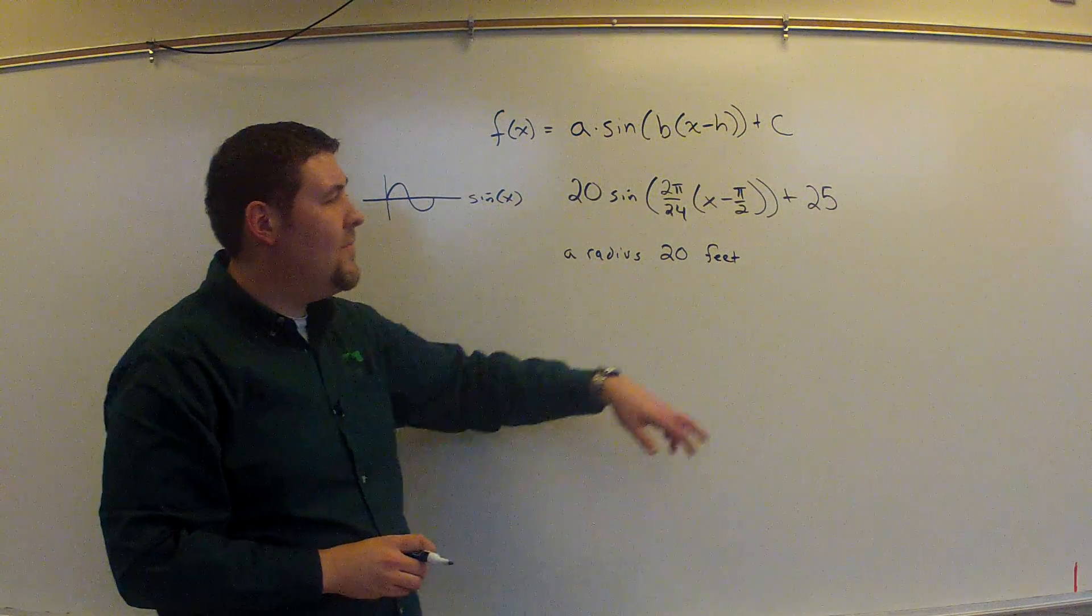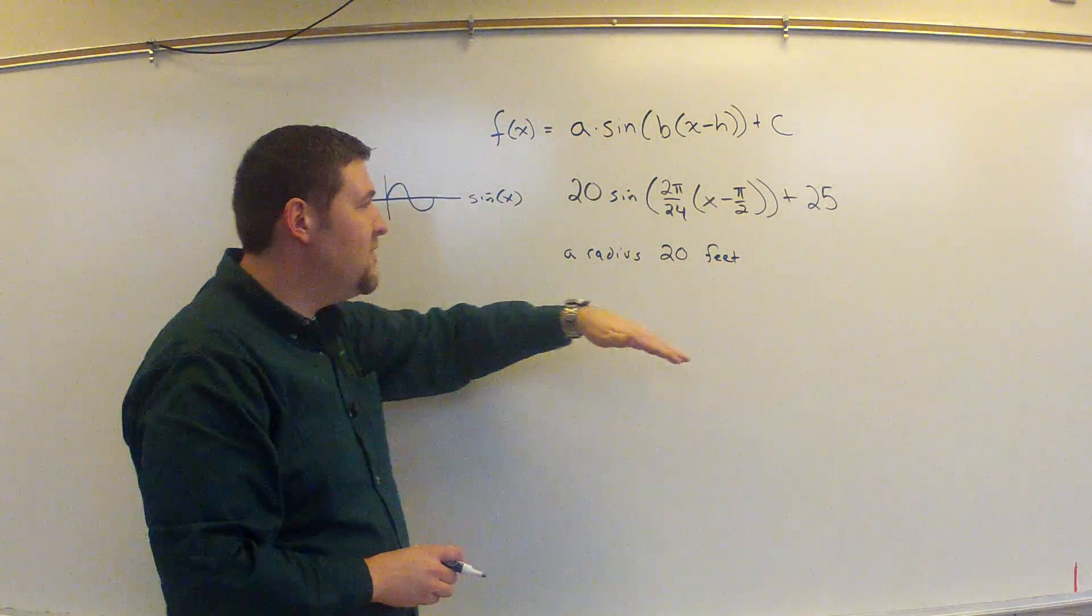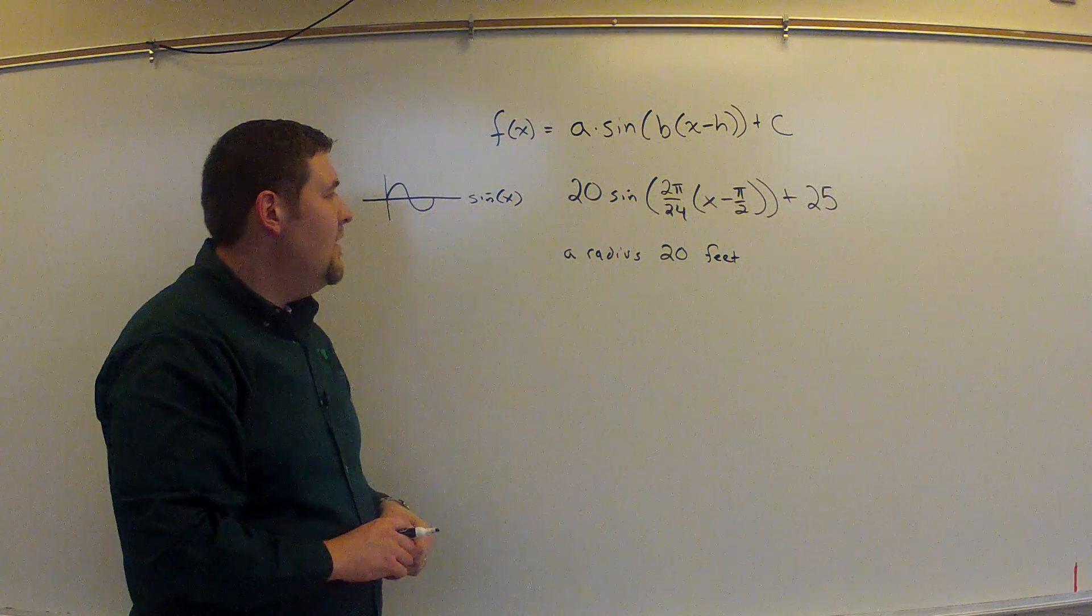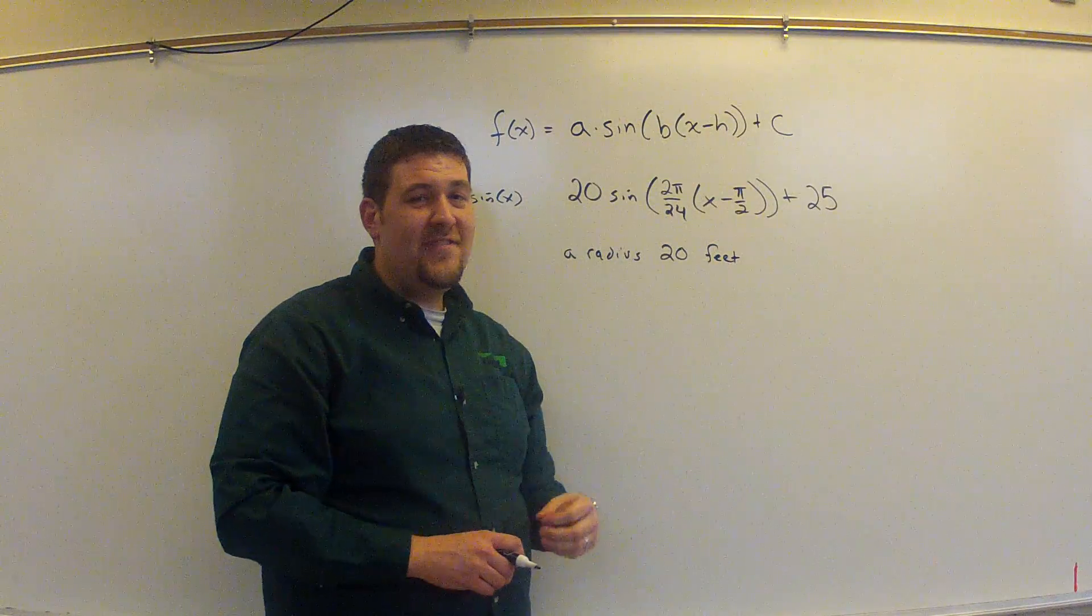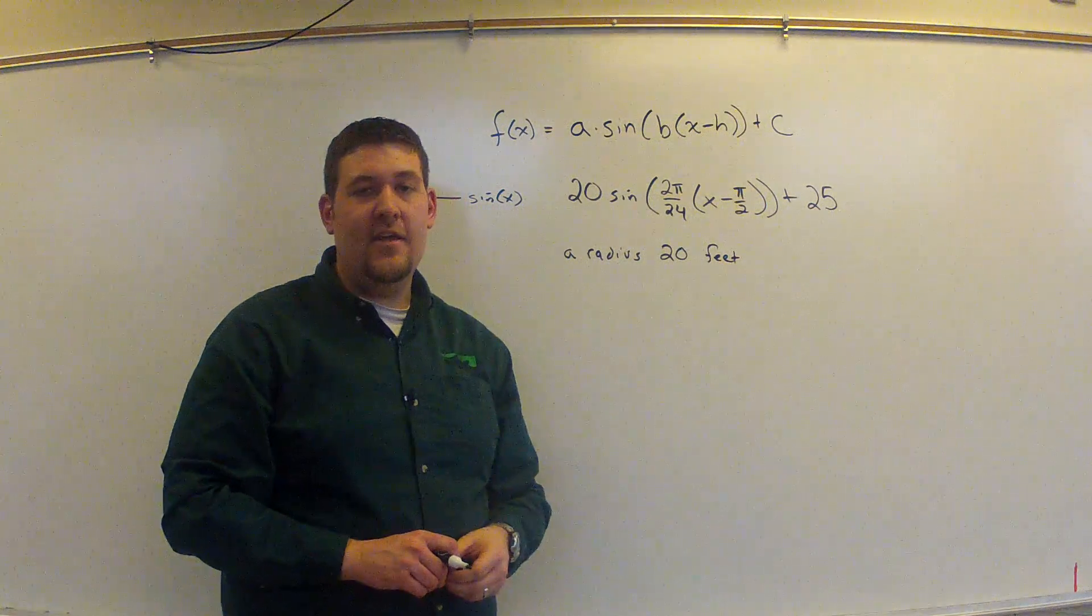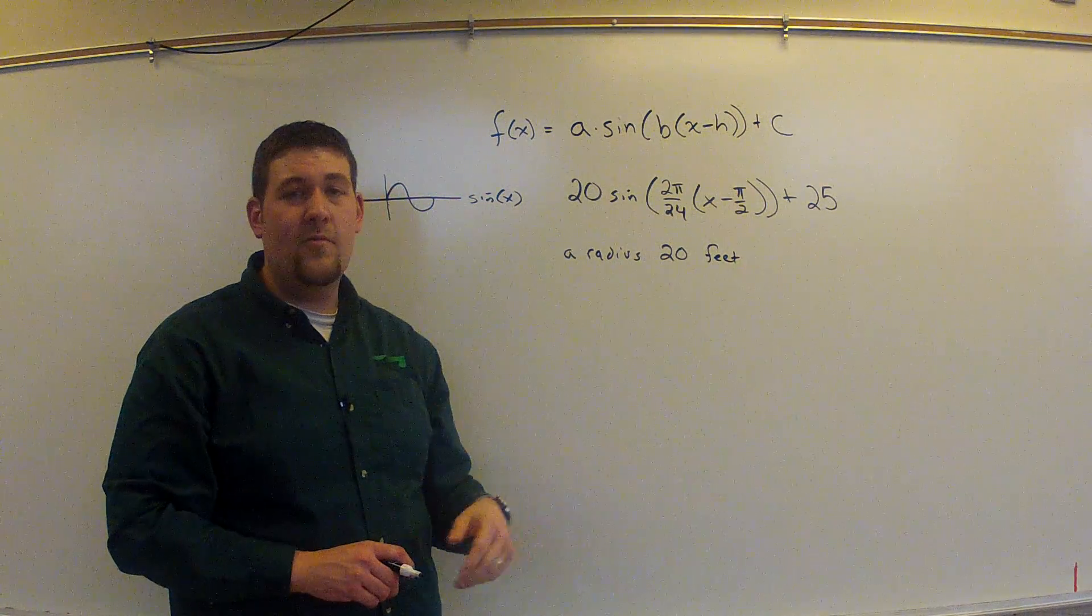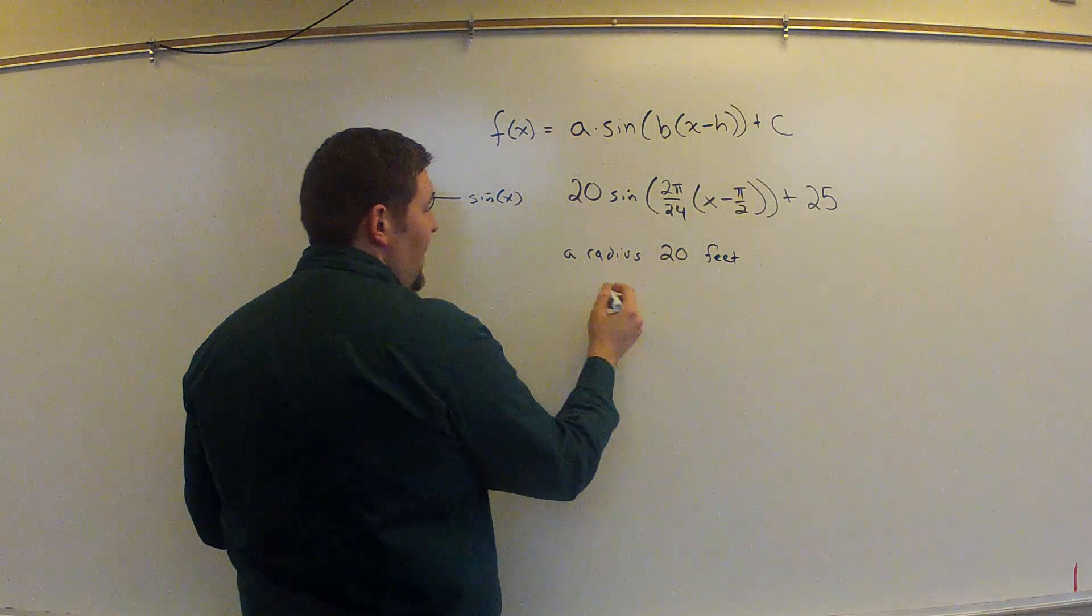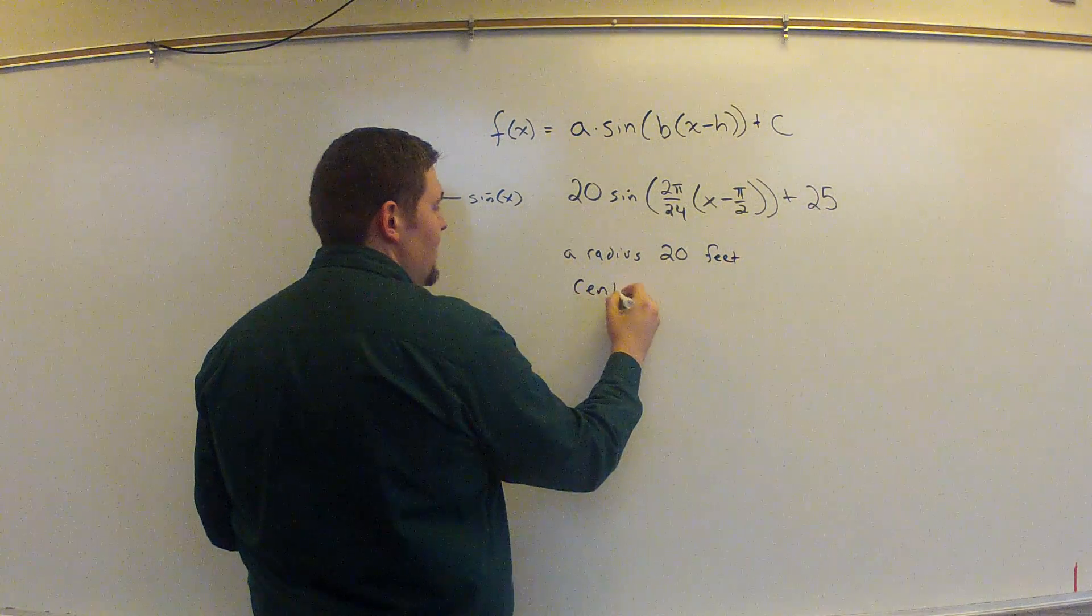But if we add something like 25, that's going to give us a vertical translation of 25 units up. So in this case, 25 is referencing the center of the sine curve, the center of the midline, which is also the center of the circle. So I could say that this has a circle centered at 25.